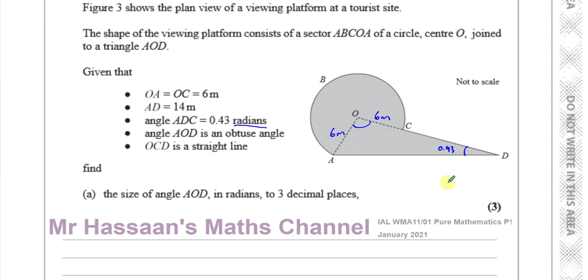We've got to find the size of angle AOD. So we're going to find the size of this angle here. We know this is 0.43 radians. We know this length is 6 meters. We know that AD is 14 meters as well. OC is only up to here, but we know the whole length AD. So, let's call this angle X. We're going to say let AOD be X, the angle AOD. We've called it X.